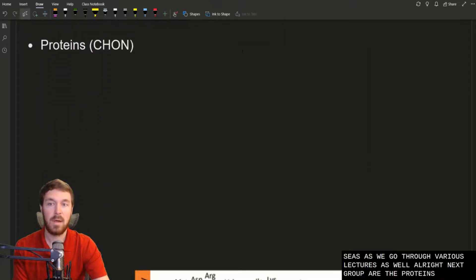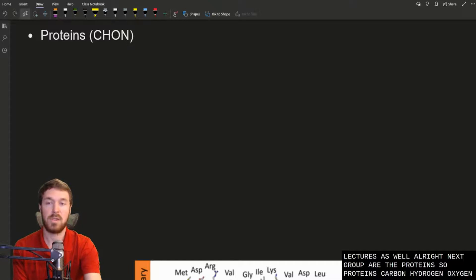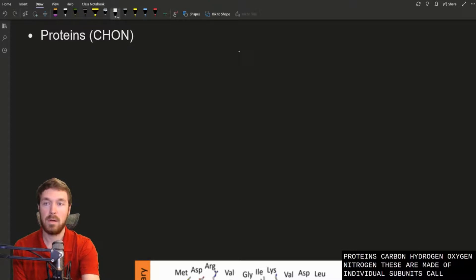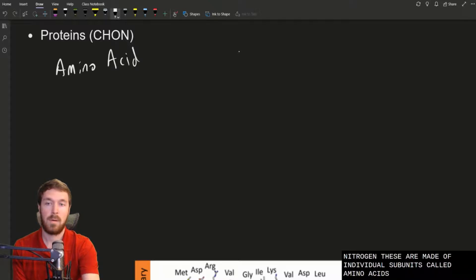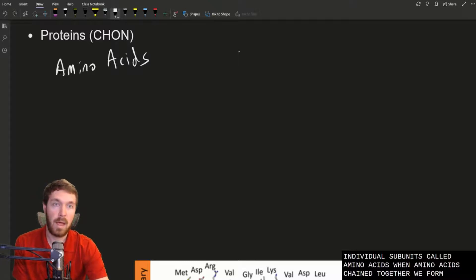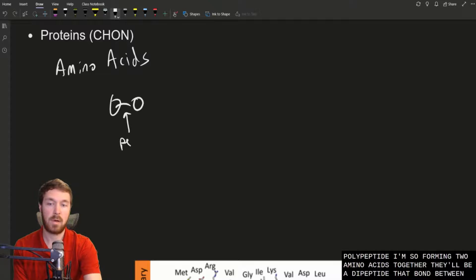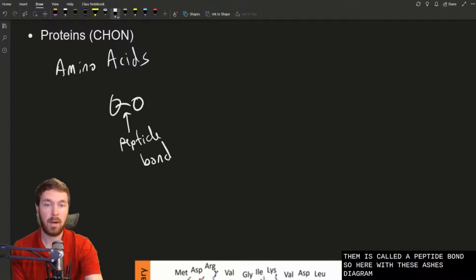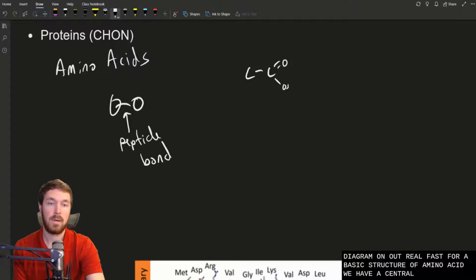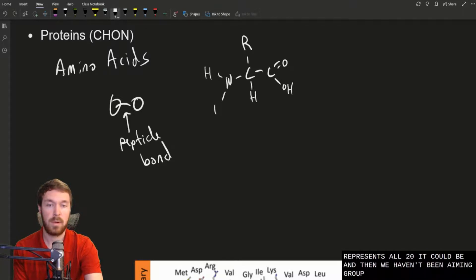Next group are the proteins. So proteins, carbon, hydrogen, oxygen, nitrogen. These are made of individual subunits called amino acids. When amino acids chain together, we form a polypeptide. So forming two amino acids together, that would be a dipeptide. That bond between them is called a peptide bond. Let's just diagram one out real fast for a basic structure of amino acid. We have a central carbon. We have a carboxylic acid group right here. Hydrogen coming off this alpha carbon. Up here is an R group. We have 20 different amino acids. This R group just represents all 20 it could be. And then we have an amine group right here. So it's a nitrogen, two hydrogens.